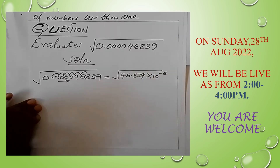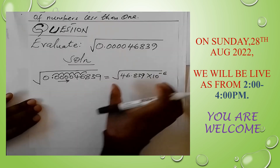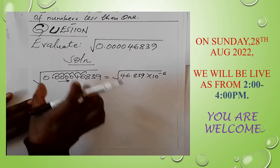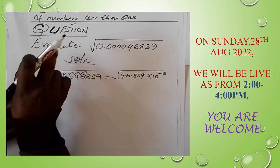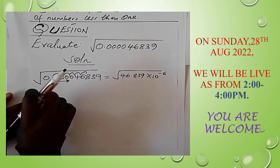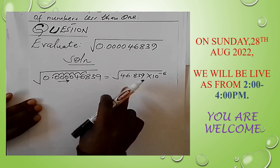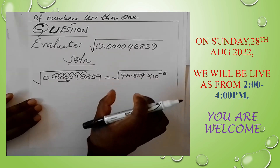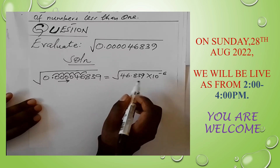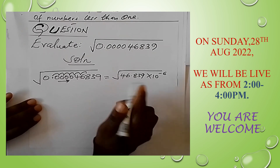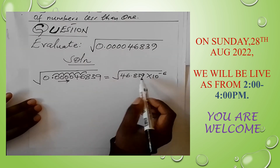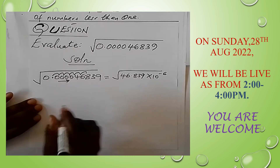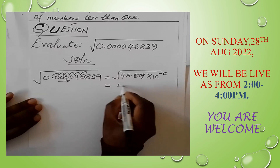This is the correct standard form because we are dealing with square roots. We will use mathematical tables to find the square root. Our tables work with numbers to 4 significant figures. Counting the significant figures in 46.839, we have 1, 2, 3, 4, 5 — so we must round off to 4 significant figures.